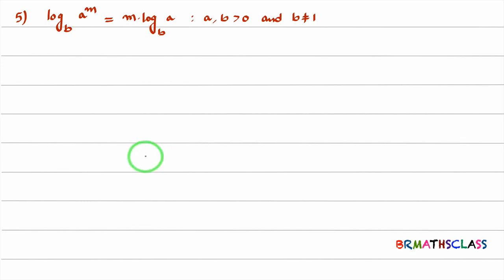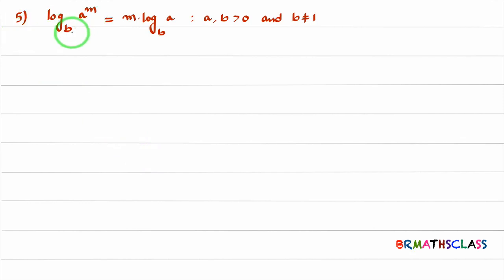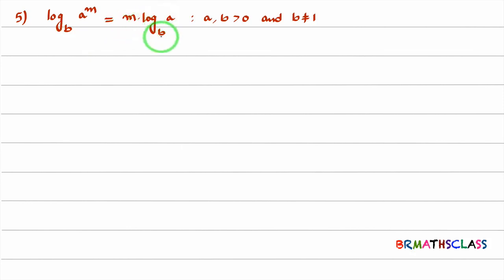You see this fifth property. What is the fifth property? Logarithm of a^m base b is m into log(a) base b. Here, a and b are positive numbers and we know that base cannot be equal to 1.